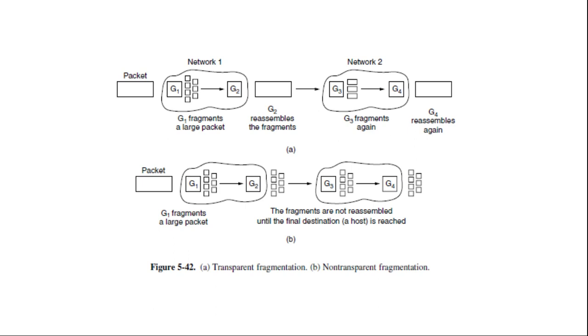In this approach, when an oversized packet arrives at G1, the router breaks it up into fragments. Each fragment is addressed to the same exit router G2 where the pieces are recombined. In this way, passage through the small packet network is made transparent, and subsequent networks are not even aware that fragmentation has occurred.